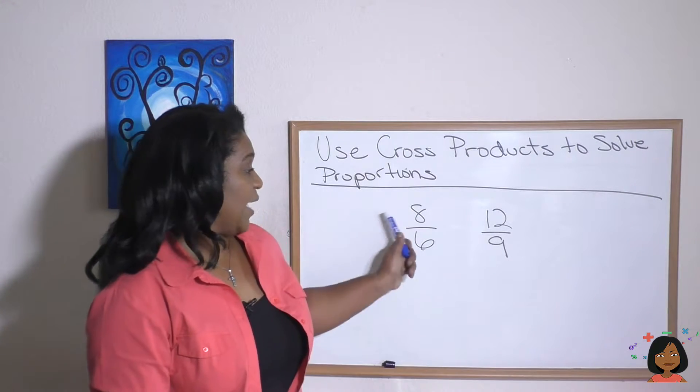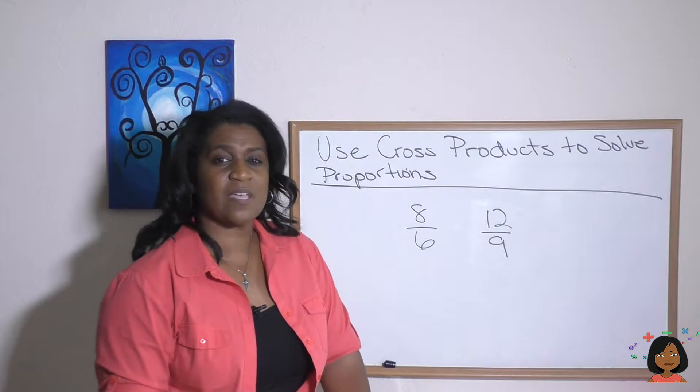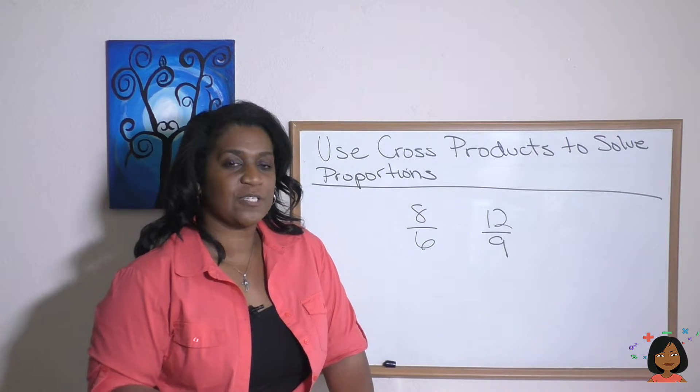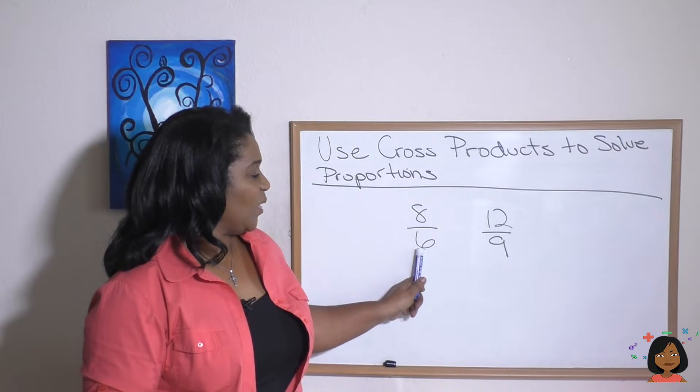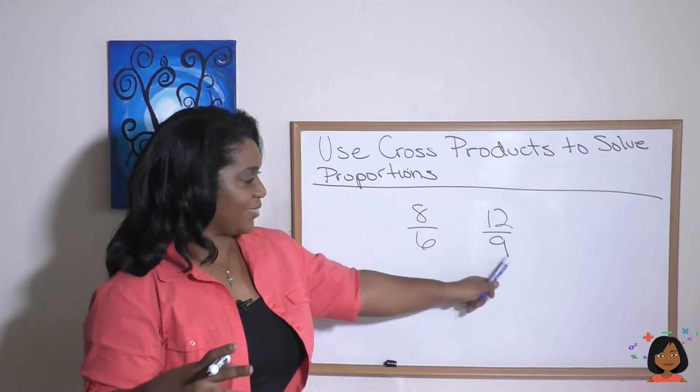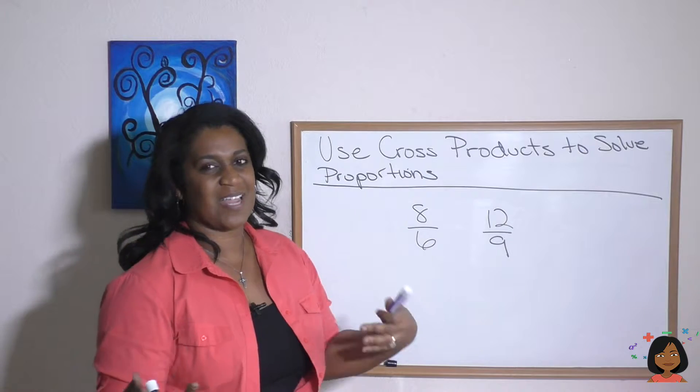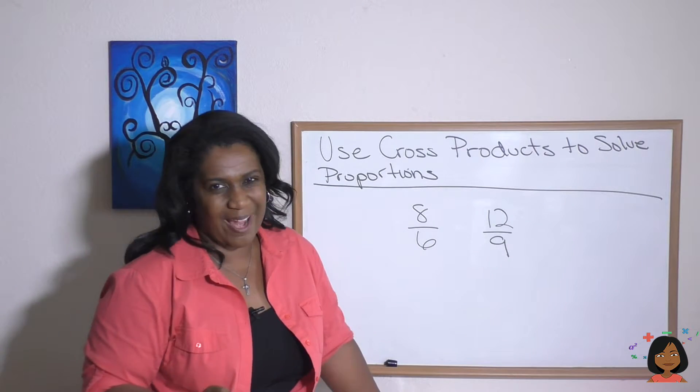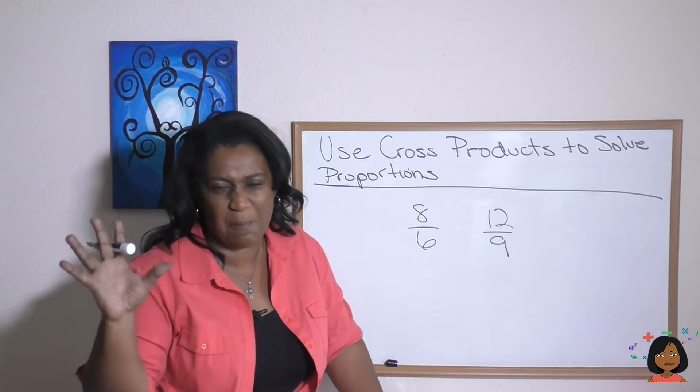Take a look at this example: 8/6 and 12/9. Are these equal proportions? Well, as you can see, we can't do a nice number to multiply this by to get this one. Six times what is nine? It has to be something with a fraction. That's not what we're trying to do. That gets complicated.